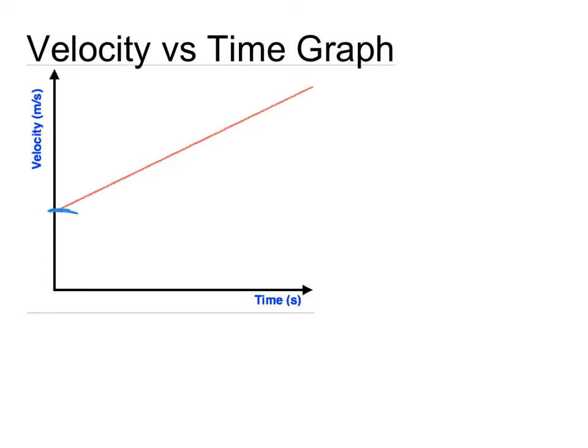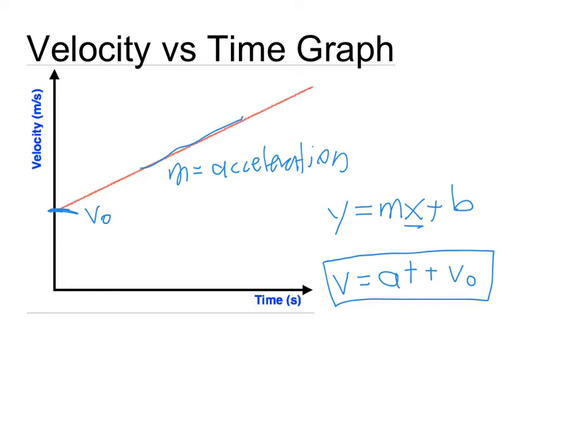So what we have here, the y-intercept is the initial velocity and our slope is the acceleration, and this occurs over some period of time. Using y equals mx plus b and fitting it to our graph, we have the velocity, which is on the y-axis, is equal to the acceleration times the thing on the horizontal axis, which is time, plus our y-intercept, which is the initial velocity. So that is our first equation.